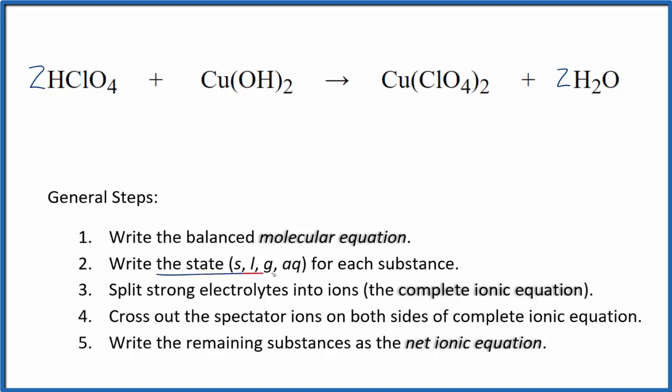Next we want to write the states for each substance. That'll look like this. Perchloric acid, that's considered a strong acid, so that'll dissociate completely into its ions. Copper 2 hydroxide, in general hydroxides are either slightly soluble or insoluble. So for an ionic equation we're calling this a solid.